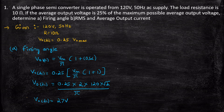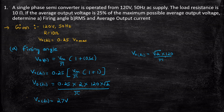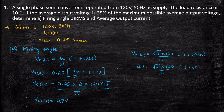Now we have found Vout_DC. To find the firing angle, we rewrite the expression: Vout_DC = (√2 × 120)/π × (1 + cos α). Substituting 27 = (√2 × 120)/π × (1 + cos α) and simplifying, you will be getting α = 120 degrees. So the first portion of the problem is completed.